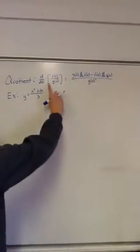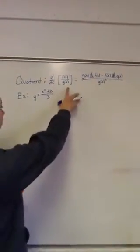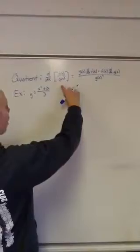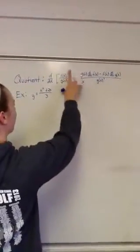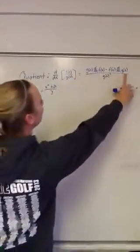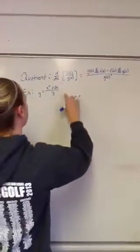And then we have our quotient when you want to take the derivative of f, something divided by something else, g. You would take the low times the derivative of the high, minus high times the derivative of the low, all over low squared.